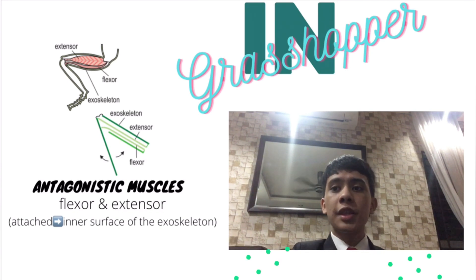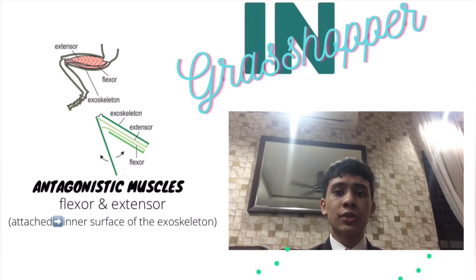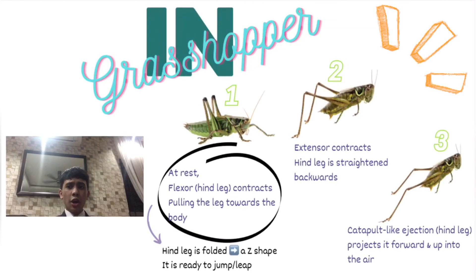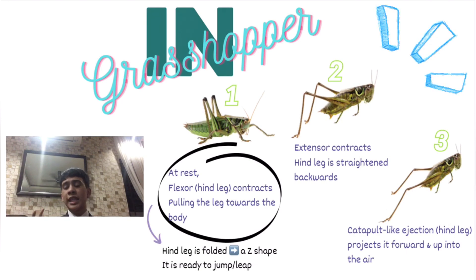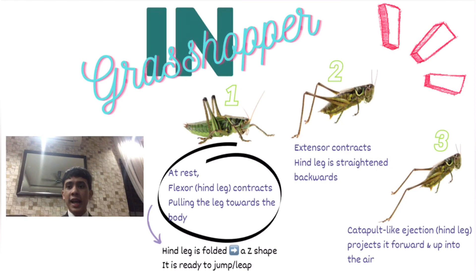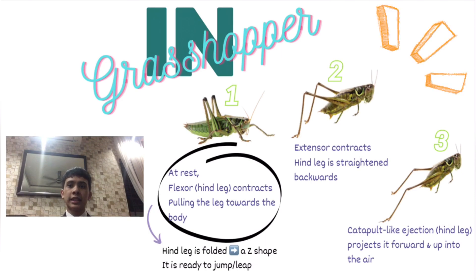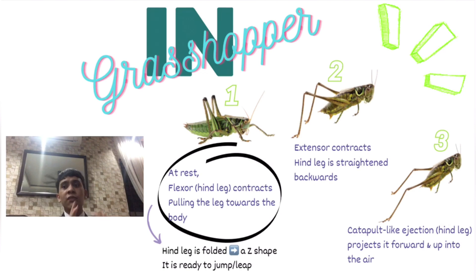For grasshopper leaping, at rest the flexor at the hind leg contracts first, pulling the leg towards the body. The hind leg is folded into a Z shape and is ready to jump or leap. Second, the extensor contracts and the hind leg is straightened backwards. Lastly, in a catapult-like ejection, the hind leg projects forward and up into the air, making it possible for the grasshopper to jump.